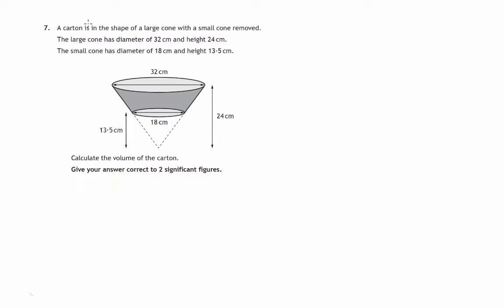Here we have a large cone with a small cone removed from it, giving you the shape of a carton. We've defined the volume of that carton giving our answer to two significant figures. Let's highlight what's going on here: large cone, and small cone being removed from that. These are the figures attached to the small cone, and these are the figures attached to the large cone.